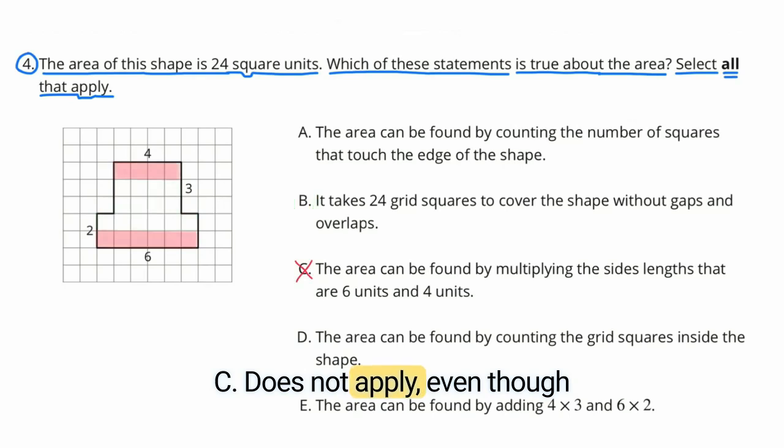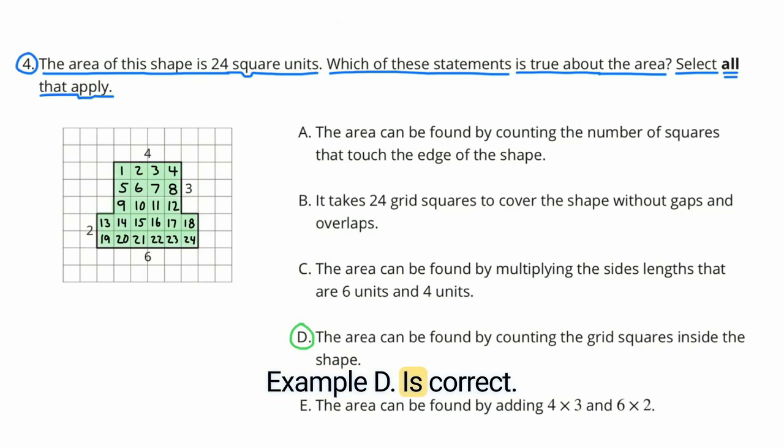C does not apply. Even though 6 times 4 does equal 24, you would need to multiply the base times the height of quadrilaterals to find the area. And in example C, they're multiplying two bases times one another. Example D is correct. The area can be found by counting the grid squares inside the shape. There are 24 grid squares inside the shape.